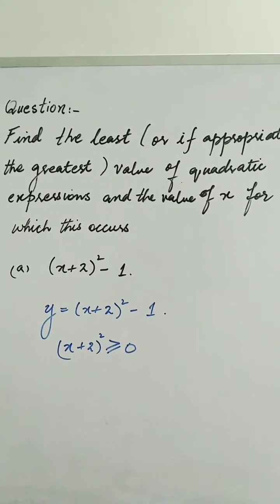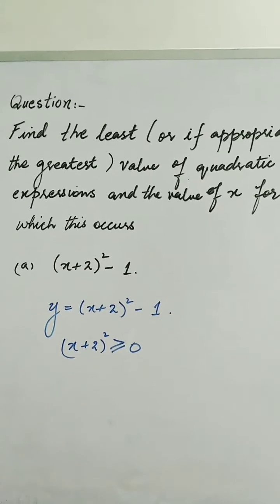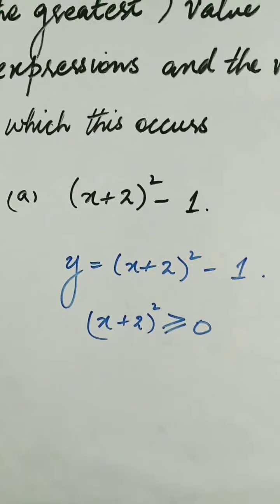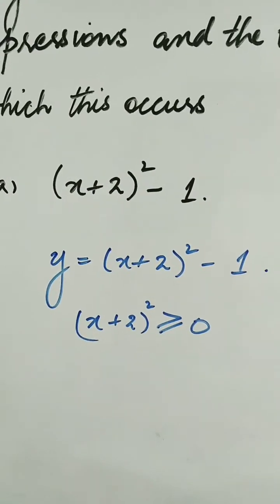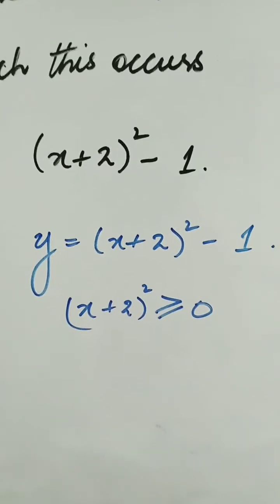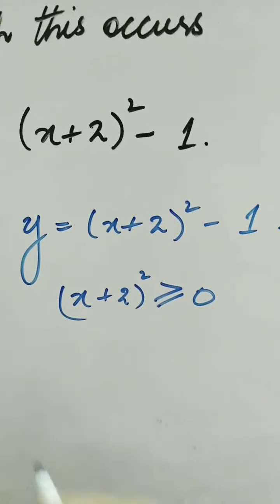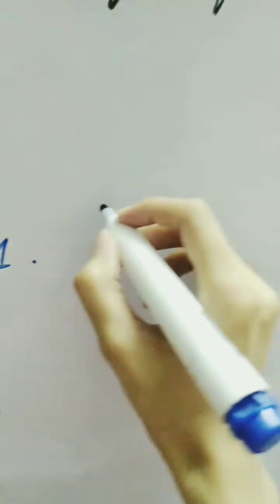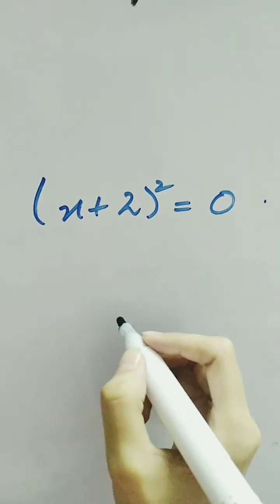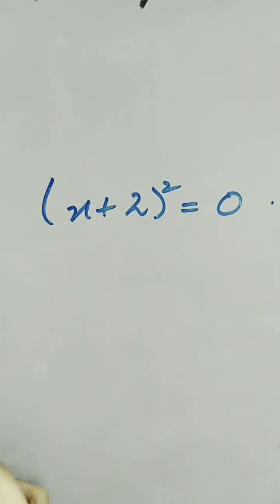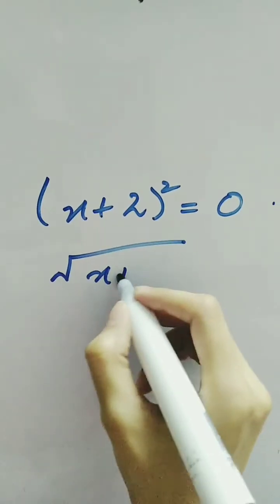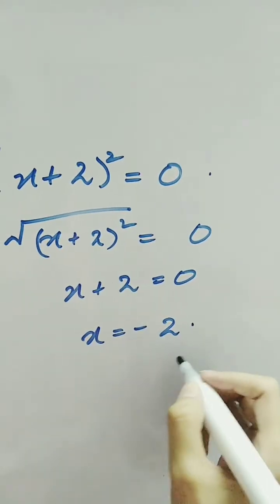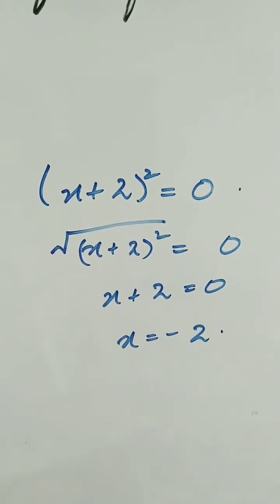In this question, we have to find the least — or if appropriate, the greatest — value of a quadratic expression and the value of x for which this occurs. The question is y = (x + 2)² - 1. Since (x + 2)² ≥ 0, we can say y ≥ -1. Equating (x + 2)² = 0 gives x + 2 = 0, or x = -2. So for x = -2, the least value is y = -1.